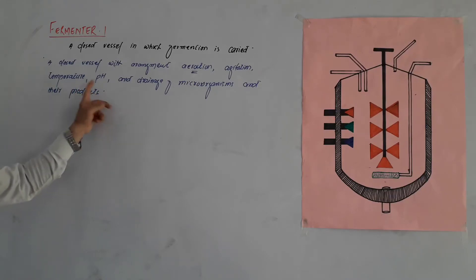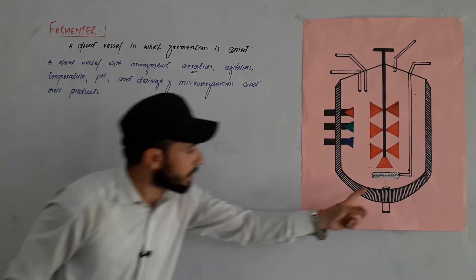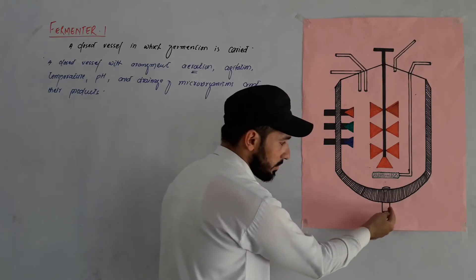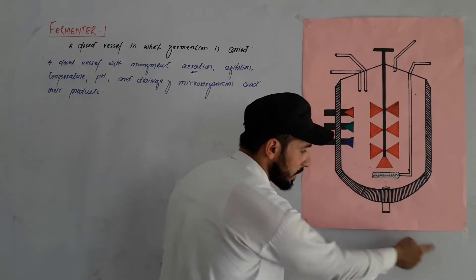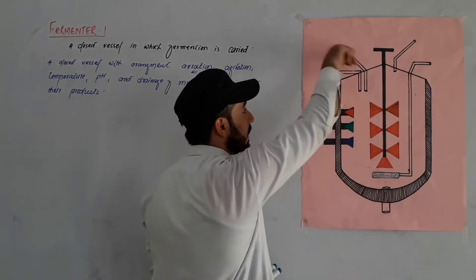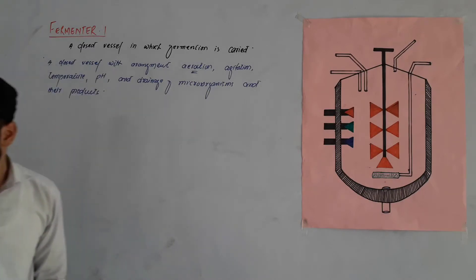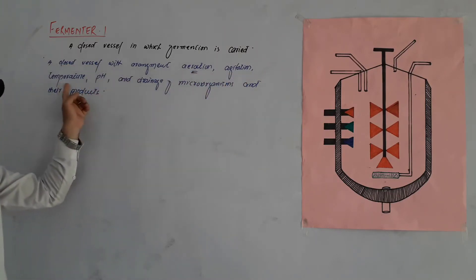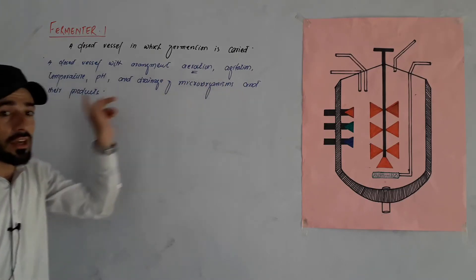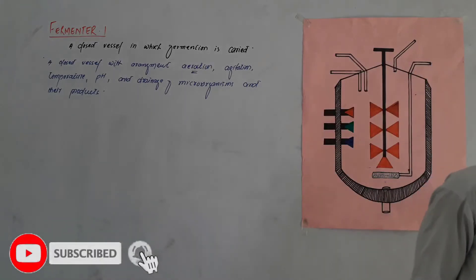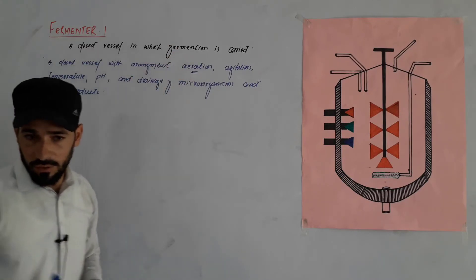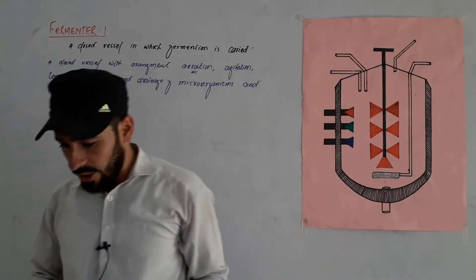pH control is also maintained. The pH level of the medium is monitored and controlled. There is also a drainage system — when the product is ready, it is drained out through the drainage system. So the closed vessel with aeration, agitation, temperature, pH control, and drainage is called a fermenter.